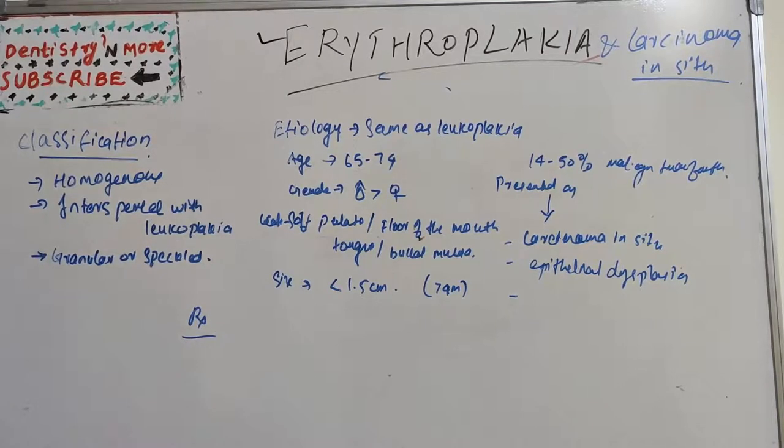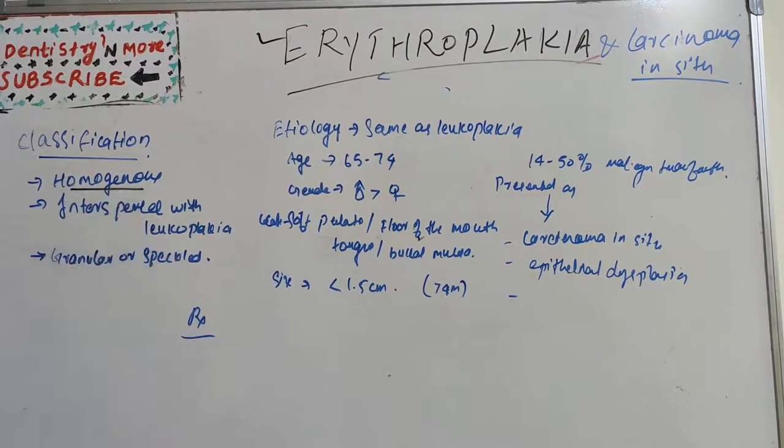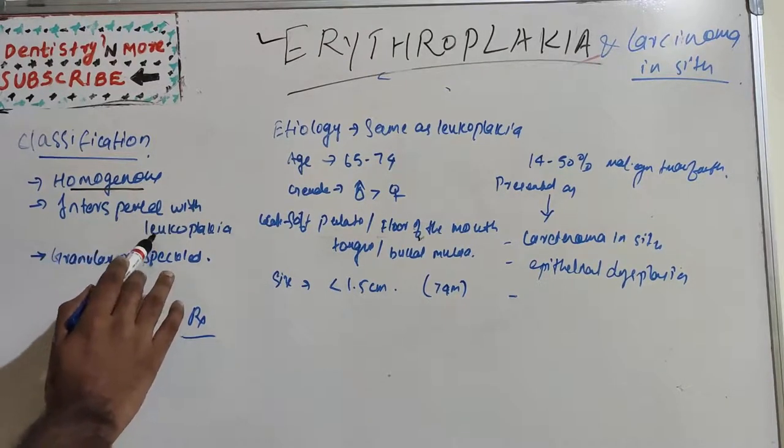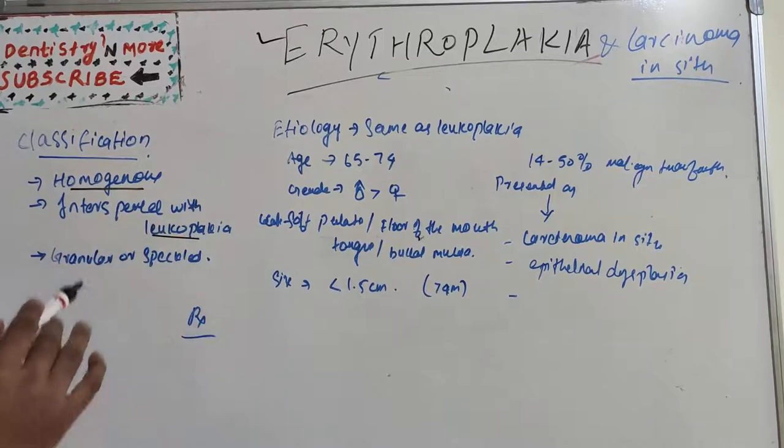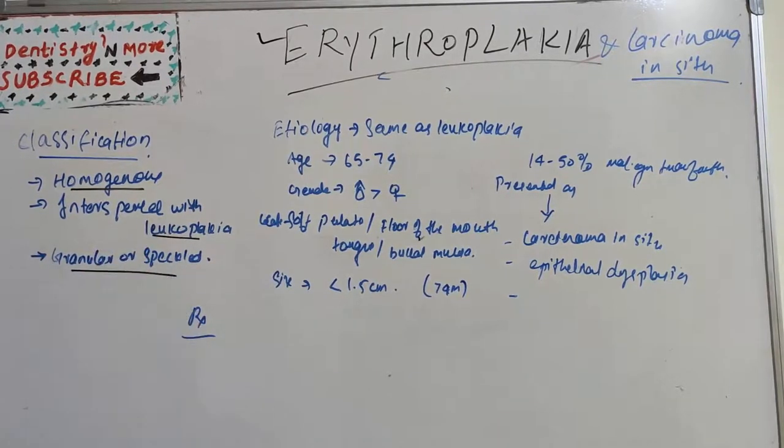Erythroplakia by definition is any lesion of the oral mucosa that presents as a bright red velvety patch or plaque which cannot be characterized clinically or pathologically as any other recognizable condition. The classification includes homogenous erythroplakia, erythroplakia interspersed with patches of leukoplakia, and granular or speckled erythroplakia.